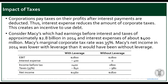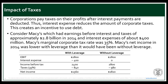Using debt creates an opportunity for the firm to reduce the value of its corporate taxes. For example, Macy's had earnings before interest and taxes of approximately $2.8 billion in 2014 and interest expense of about $400 million. The marginal corporate tax rate is 35%. With leverage, income before tax is $2.4 billion; taxes are $840 million; and net income is $1.560 billion.